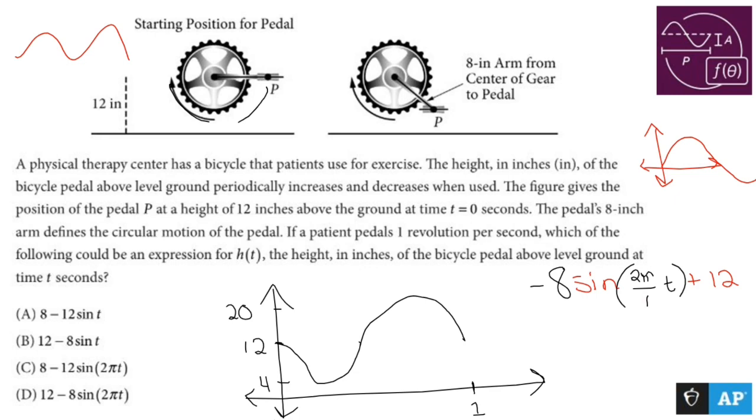So if I were to clean this up and put it in the order that they want, I have 12 minus 8 sine 2π over 1 times t. I had to do a little bit of thinking for this one, but yeah, that's fun stuff, good old sine.